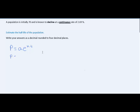So for my problem, the initial population A is 70. The population is declining, so that'll be a negative rate. Since k is the continuous rate as a decimal, I'll convert this percentage into a decimal by writing -0.0269. T represents time in years, and P is the future population.